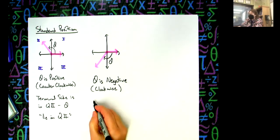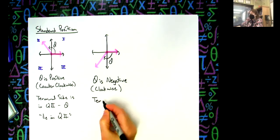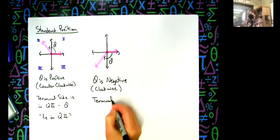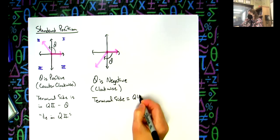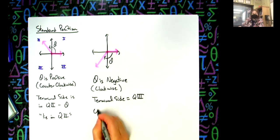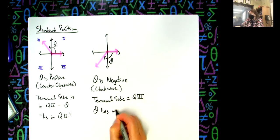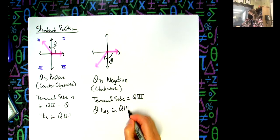And again, my terminal side is in quadrant three, which means theta lies in quadrant three. So wherever that terminal side is, is where we consider the angle to be.